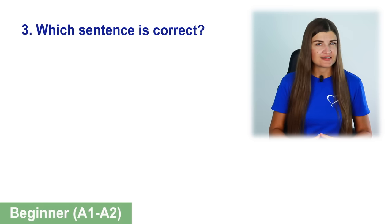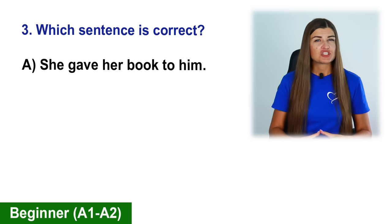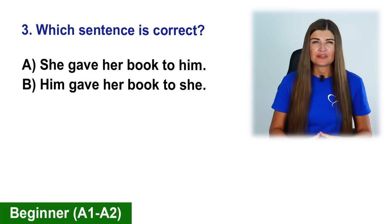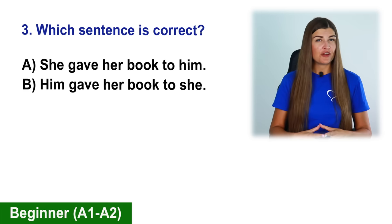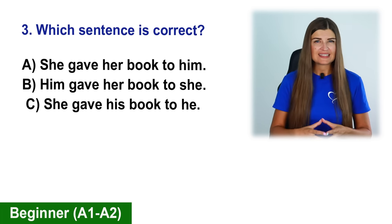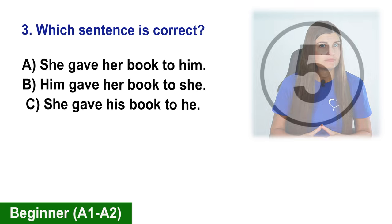Which sentence is correct? A. She gave her book to him. B. Him gave her book to she. C. She gave his book to he.